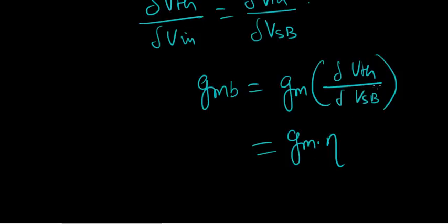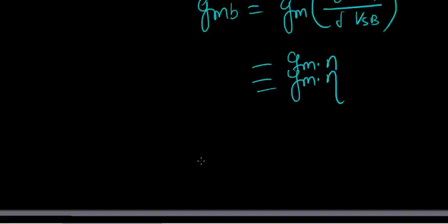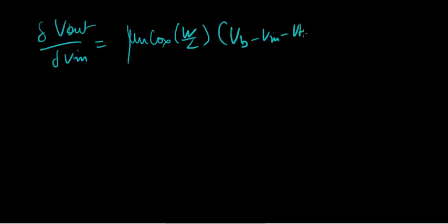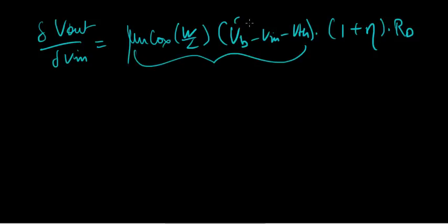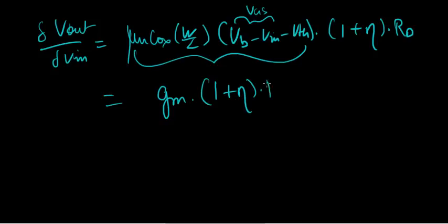If you just consider this thing, delta Vth over delta Vin, I just now said that it is actually delta Vth over delta Vsb. And from that previous lecture, we know that Gmb equals Gm times delta Vth over delta Vsb. And we call this term eta. Gm times eta. So that means delta Vth over delta Vsb is nothing but eta. So delta Vout over delta Vin equals mu N Cox w over L, Vb minus Vin minus Vth times 1 plus eta times Rd. Now look at this. Mu N Cox w over L, Vgs minus Vth is Gm itself. And here there's 1 plus eta times Rd. That's all. That's your gain. Delta Vout over delta Vin.